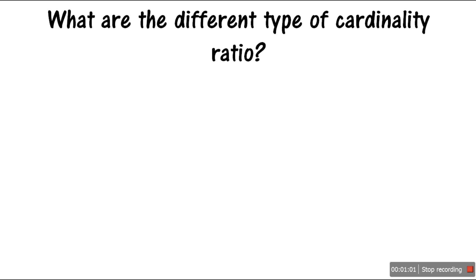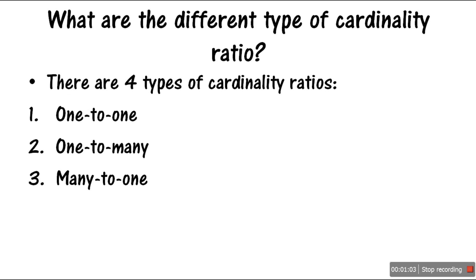There are four types of cardinality ratio. The first is called one-to-one, the second is one-to-many, the third is many-to-one (which is similar to one-to-many), and the fourth is called many-to-many cardinality ratio.